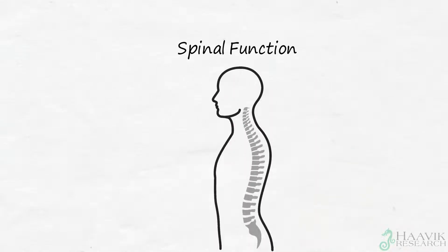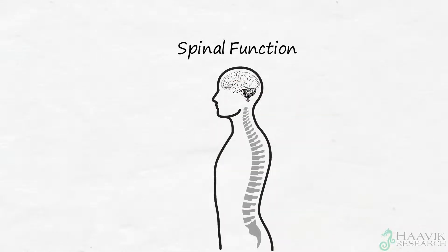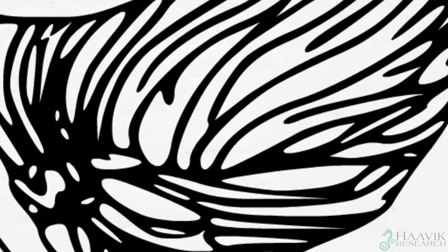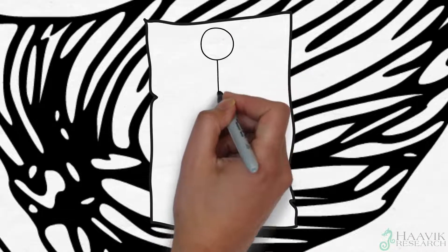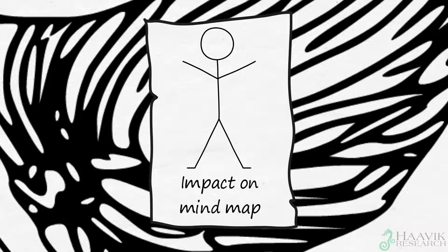This series of research studies, along with lots of other studies, show us that even if you are not in pain, if your spine is not working well, this can impact the way your brain, including your cerebellum, perceives how you are sitting or standing, and where your arms and legs are, and how they move.